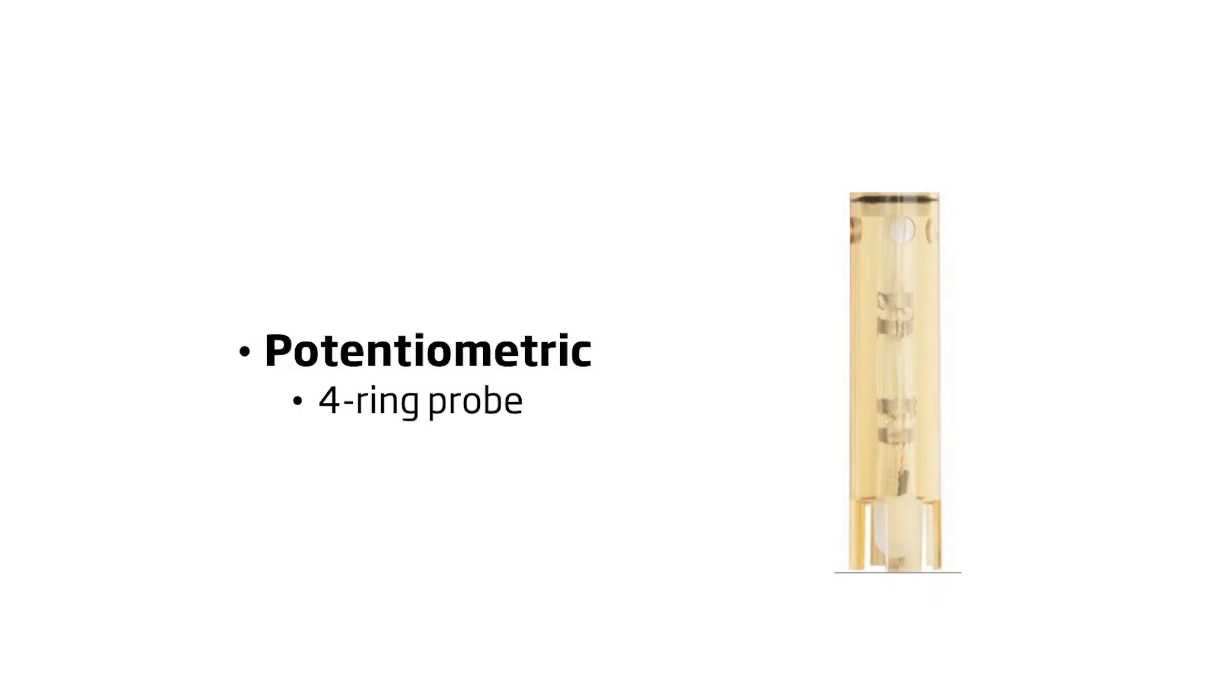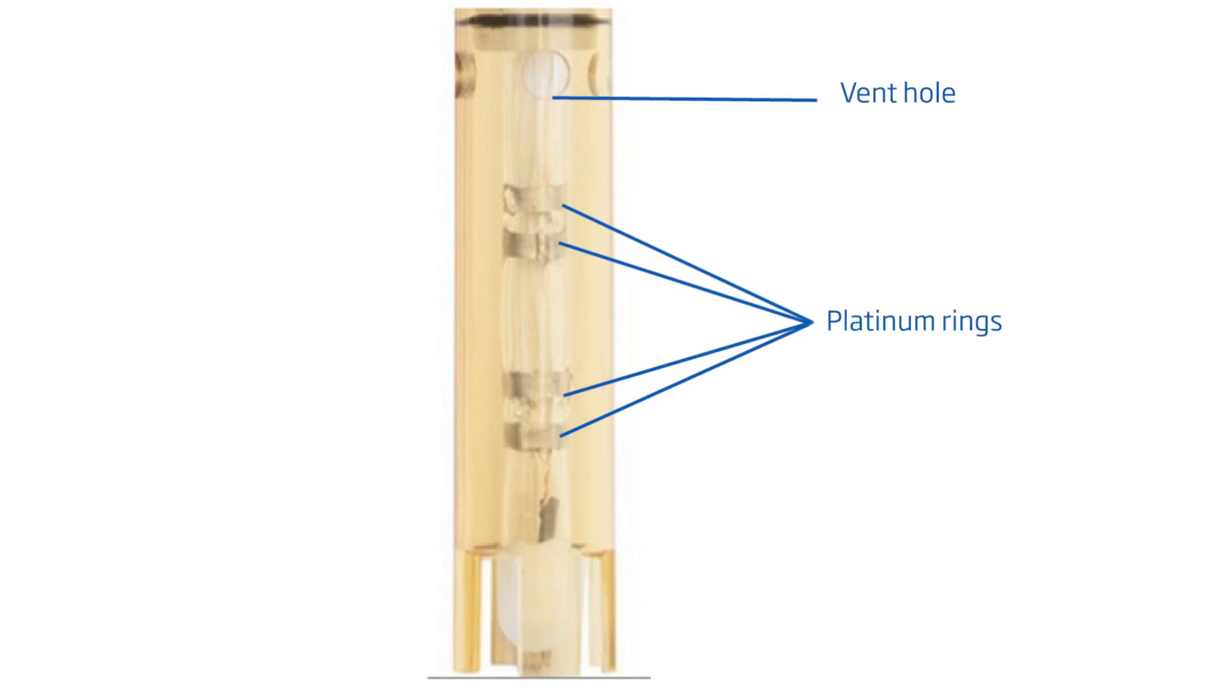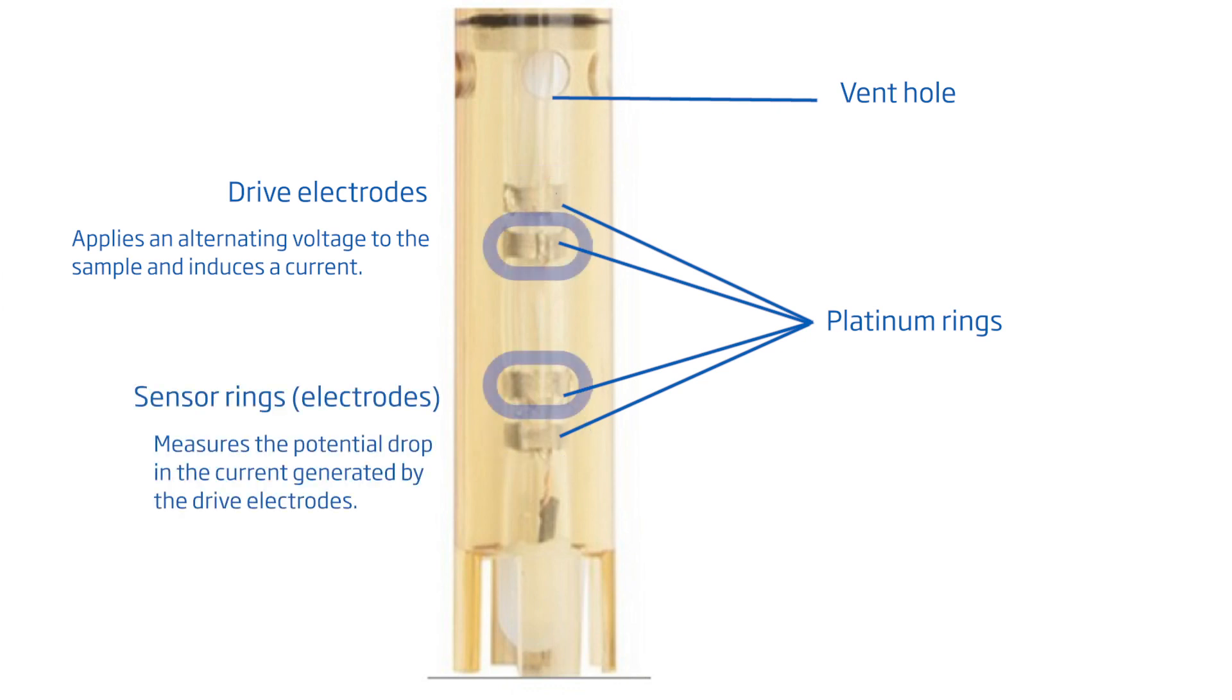A four-ring probe works a bit differently than the two-electrode probe. Instead of having two electrodes that pass an alternating current back and forth, this probe has four platinum rings on the body of the electrode, as well as a vent hole. The top and bottom rings act as drive electrodes for the probe. These two rings apply an alternating voltage to the sample, and this induces a current. The two center rings are your sensor rings, or electrodes. They measure the potential drop in the current generated by the drive electrodes.